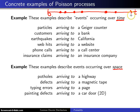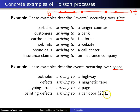But this axis does not only have to be time — it can also be space. For example, you could have potholes along a highway, where the length of the highway is the axis and the dots are where potholes occur. You could also have defects arriving to a magnetic tape, typographical errors arriving to a page of text, or painting defects arriving to a car door — although that last example is two-dimensional rather than one-dimensional.